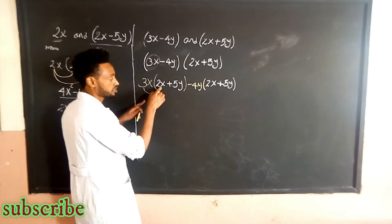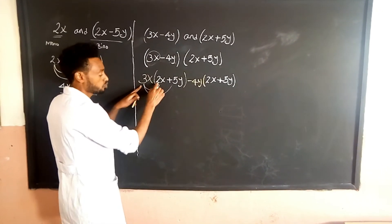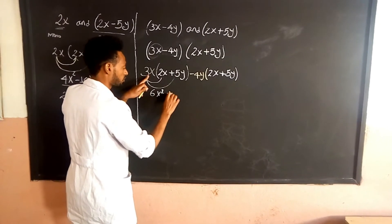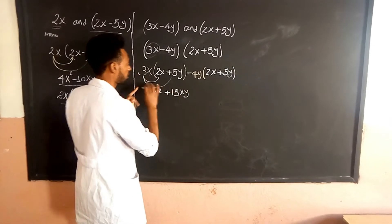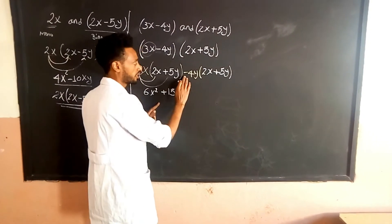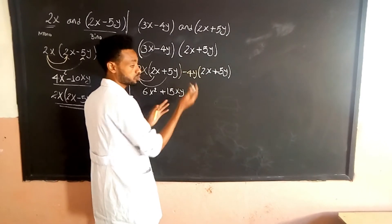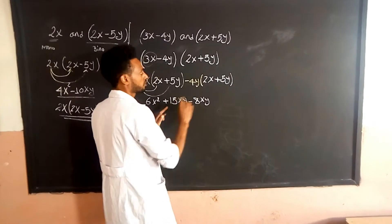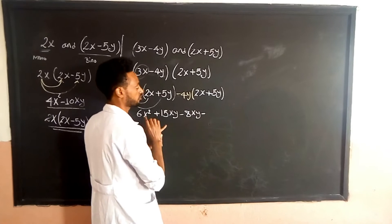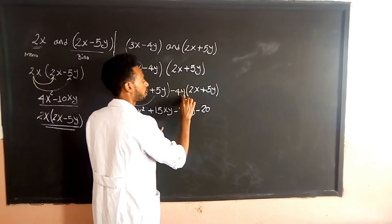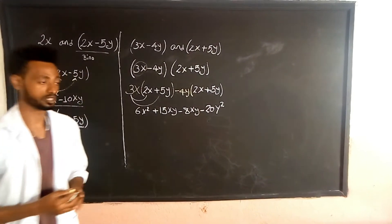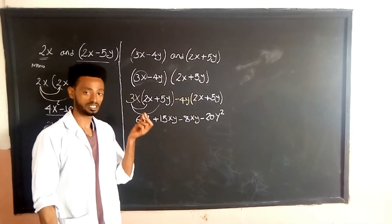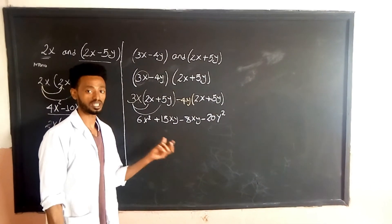3x times 2x: 3 times 2 is 6, x times x is x squared, giving 6x². Then 3x times 5y: 3 times 5 is 15, x times y is xy, giving 15xy. Now negative 4y times 2x: negative times positive is negative, 4 times 2 is 8, y times x is xy, giving negative 8xy. Then negative 4y times negative 5y: negative times negative is positive, 4 times 5 is 20, y times y is y squared, giving positive 20y².